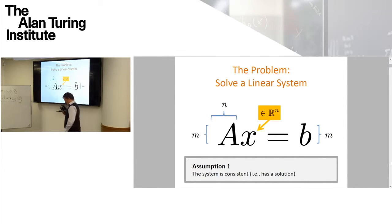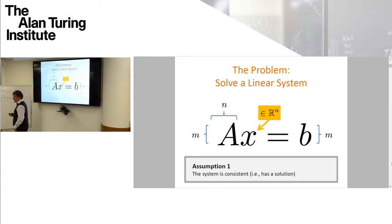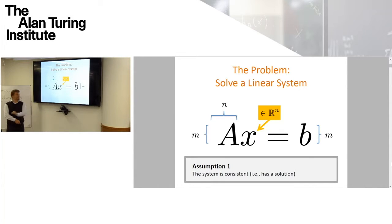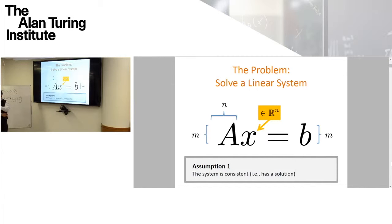A paradigm in stochastic optimization, machine learning, and other fields is that you should design an iterative method which looks at only small parts of the data at a time. Here I'll assume that the system has a solution — if it doesn't, I don't know what I'm talking about. That is the one assumption I'll throw in.